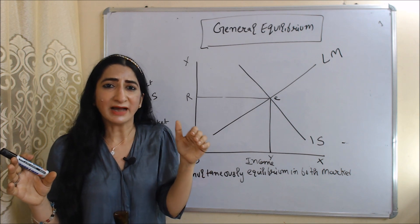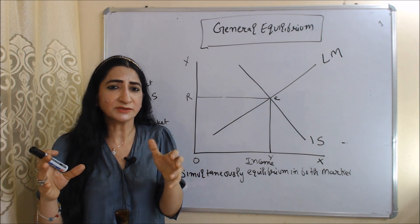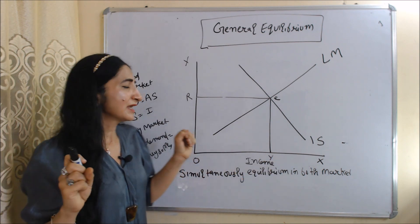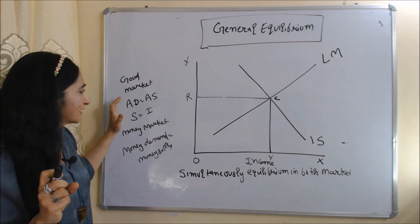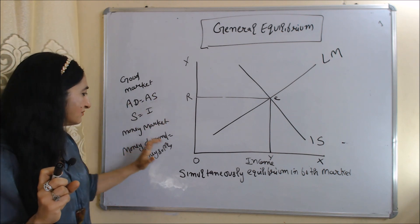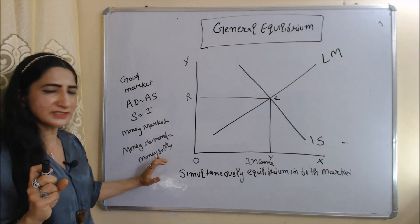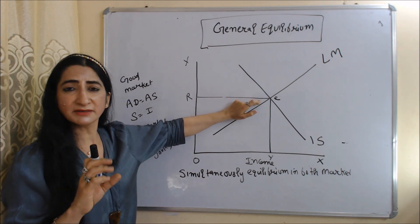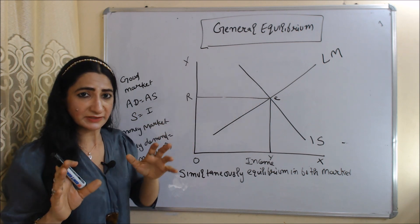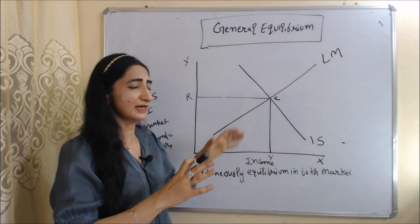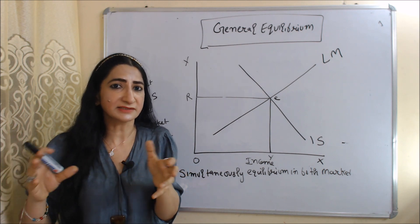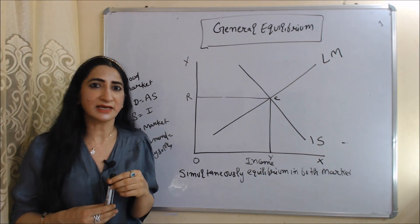Please listen carefully. When IS and LM intersect each other, that means both markets — the goods market as well as the money market — are simultaneously in equilibrium. The goods market is in equilibrium when aggregate demand is equal to aggregate supply, and saving is equal to investment. The money market is in equilibrium when money supply is equal to money demand. So we can say that when IS and LM intersect each other, both markets are simultaneously in equilibrium. This is all about the IS-LM model.